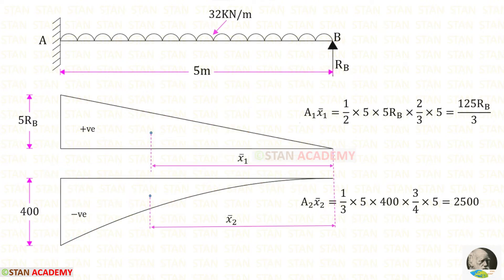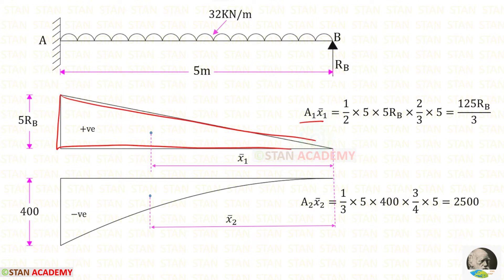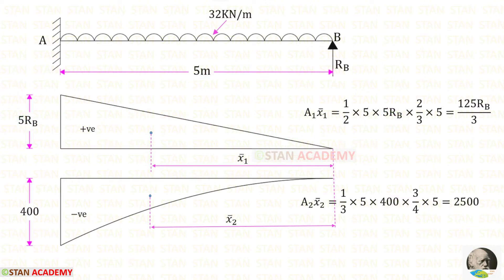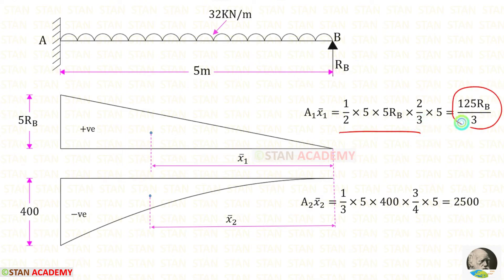Now let us find area 1 × x̄₁. It is a triangle, so the area formula is ½ × b × h. Here the breadth is 5 and the height is 5Rb. The centroid distance x̄₁ = 2/3 × b = 2/3 × 5. After calculation, we get area 1 × x̄₁ = 125Rb / 3.